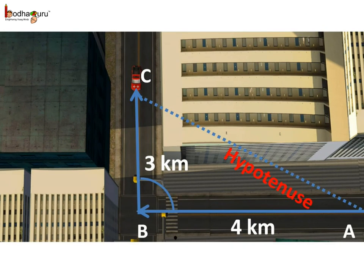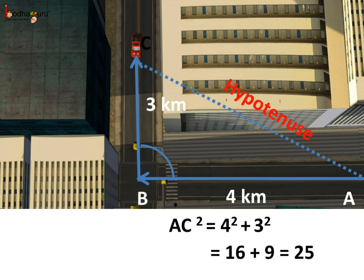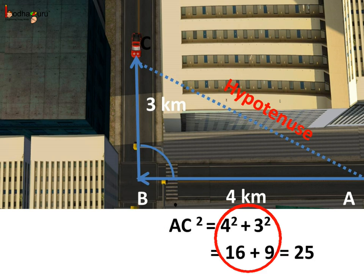Now using this theorem, let us find the distance AC, the hypotenuse of right angle triangle ABC. The base AB is equal to 4 kilometers and BC, the perpendicular, is equal to 3 kilometers. According to the Pythagoras theorem, AC squared is equal to 4 squared plus 3 squared. Now 4 squared is 16 and 3 squared is 9.